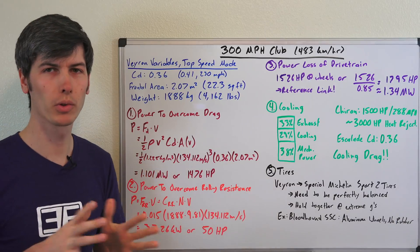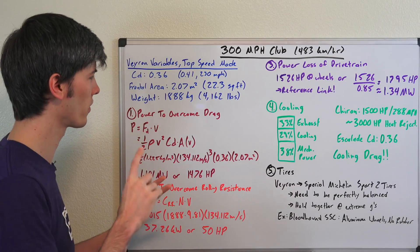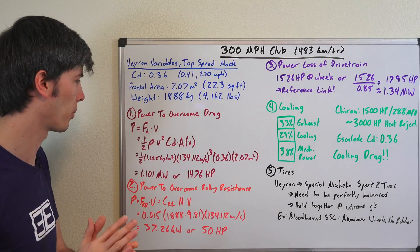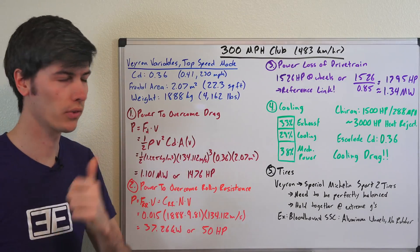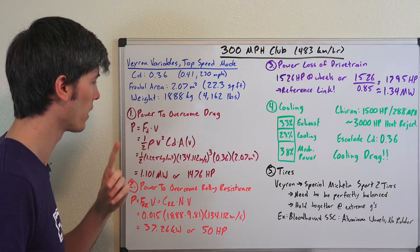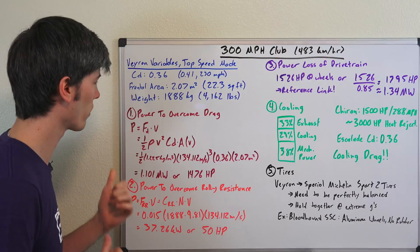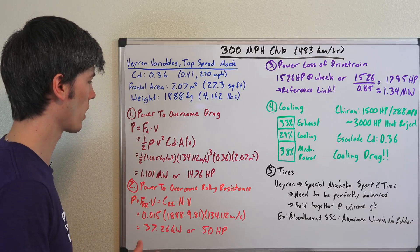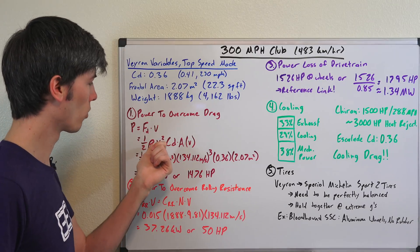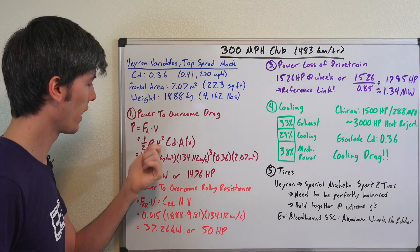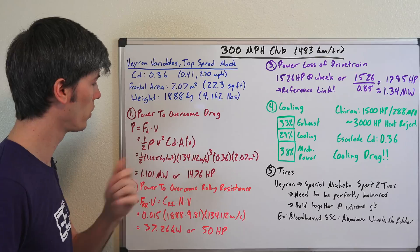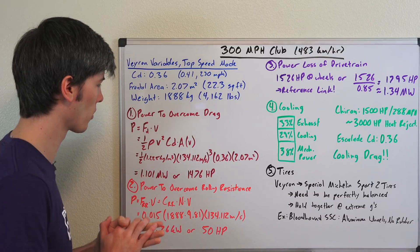So the first thing we're going to do is find out how much power does this vehicle need to overcome aerodynamic drag in order to reach 300 miles per hour. Power is equal to force times velocity. So if we find the force of drag multiply that by 300 miles per hour that will give us how much power we need to overcome aerodynamic drag alone. That's equal to one half rho which is the density of air at sea level. This is 1.225 kilograms per meter cubed at 15 degrees Celsius.